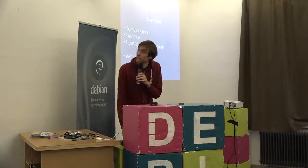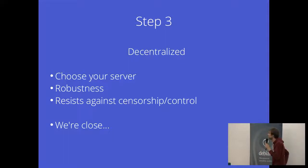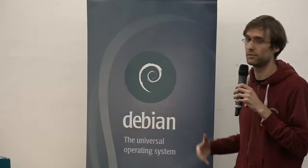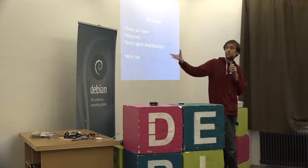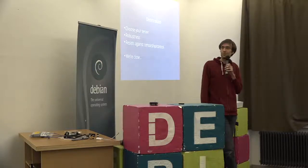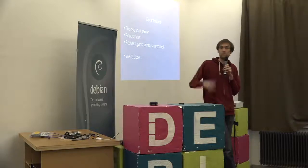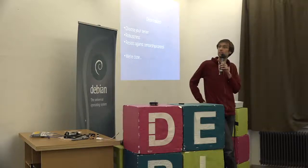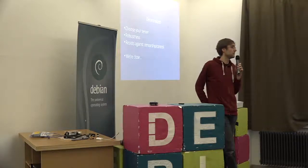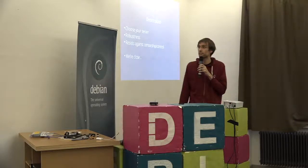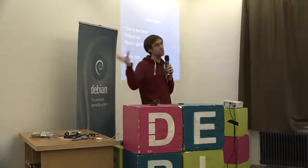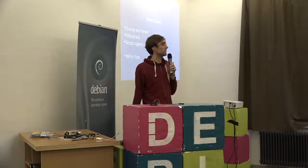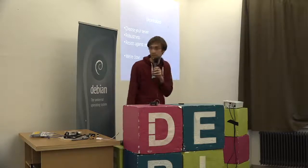It needs to be decentralized, because a centralized social network, even if it's open source, if it's only one instance, you still have to trust the instance. You would like to deploy your own instance. Decentralization also brings robustness. We've seen too many times that a single server fails — Signal had an issue recently with their Amazon server and the whole thing didn't work for a couple of hours. And it helps resist against censorship control — same thing with Telegram in Russia at the moment.